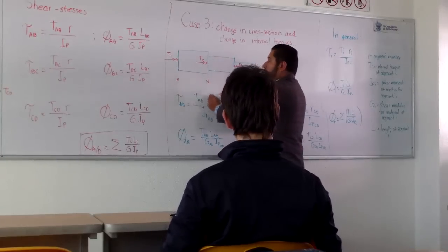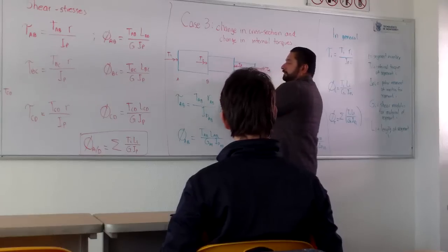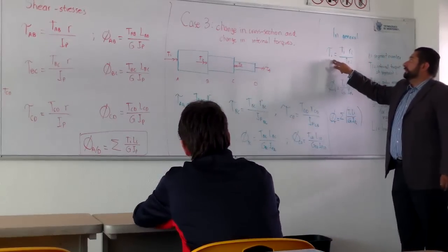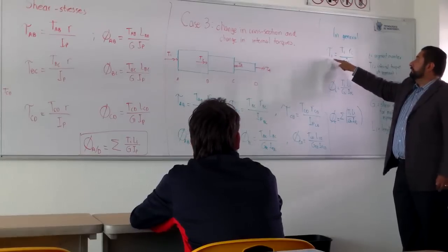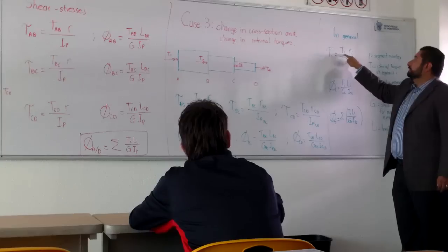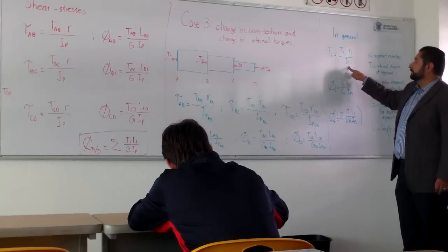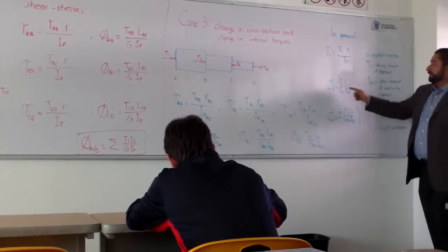For AB is this one, for BC is this one, and for CD is this one. In general, you need to find the shear stress using the appropriate values for the segment, for the internal torque, for the radius and for the polar moment of inertia. And the same for the angle.